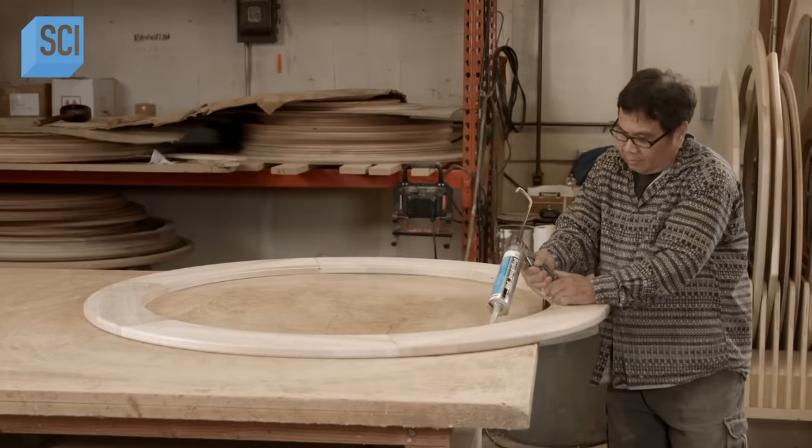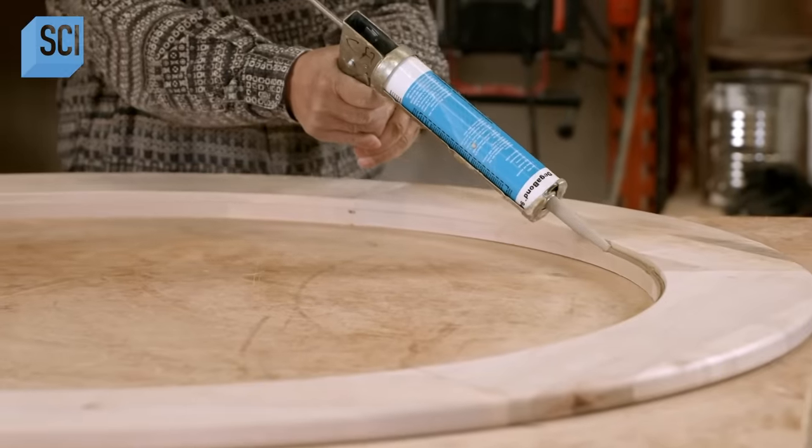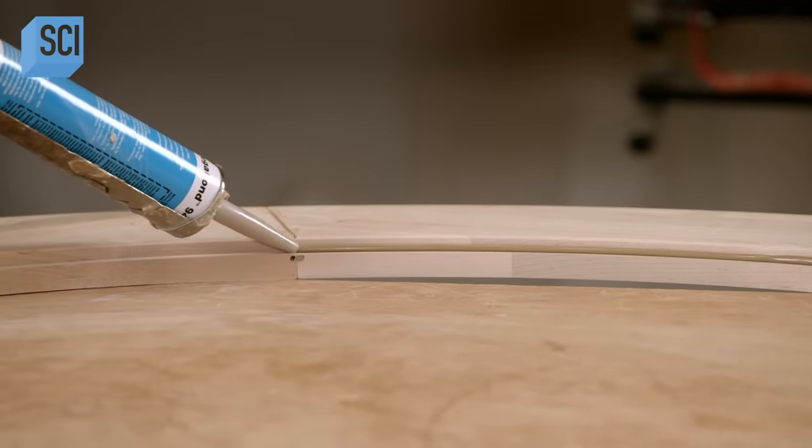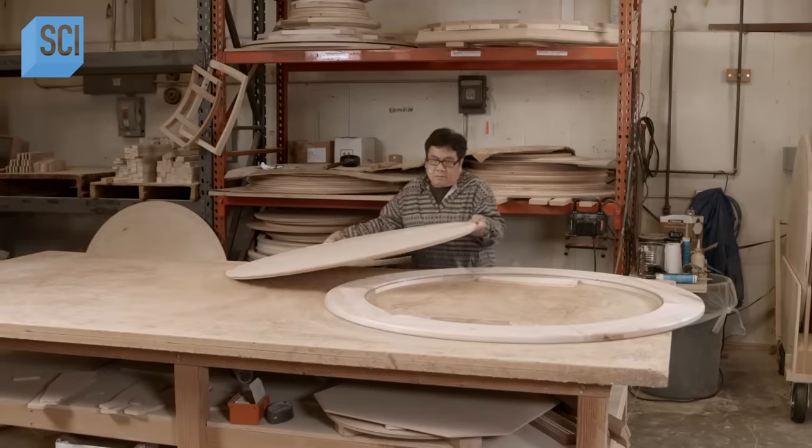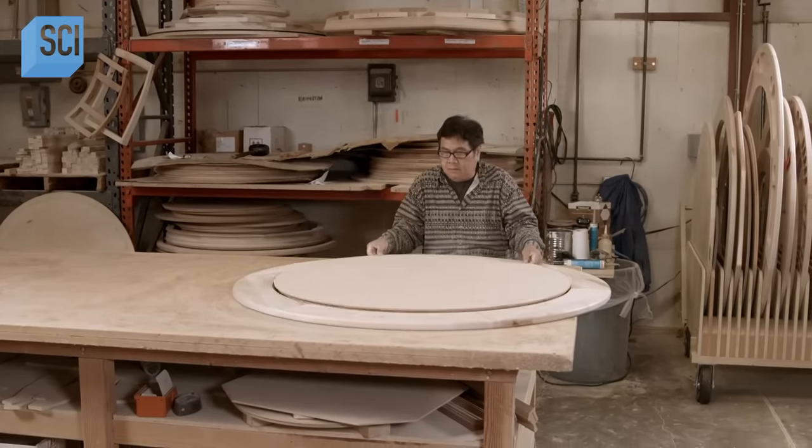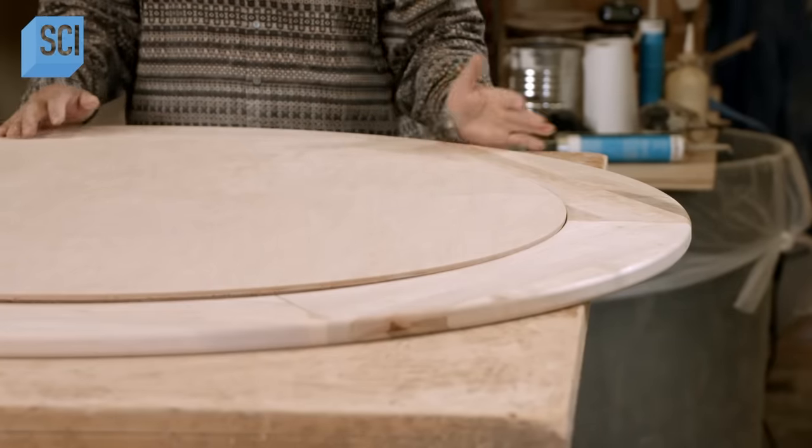With the rim now game side down, the next member of the team pipes more of the super adhesive into the inner channel. He inserts the dining table surface. This maple center has been precision cut to fit into the groove in the rim.